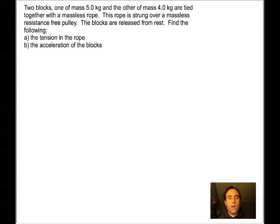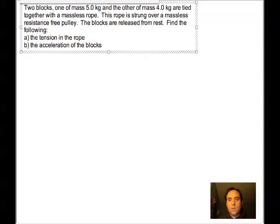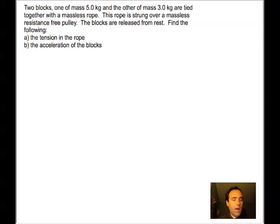where we're looking at two blocks that are tied together by a piece of rope and on a pulley. Both the rope and the pulley are massless, so there is no friction and no mass associated with that. So you have two blocks. One is a five kilogram block and the other is a three kilogram block.